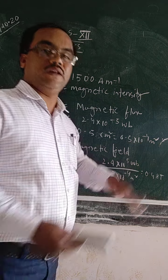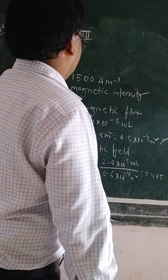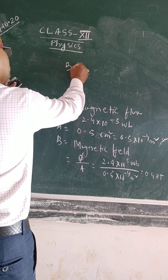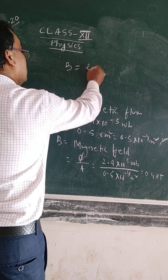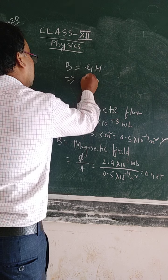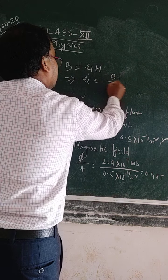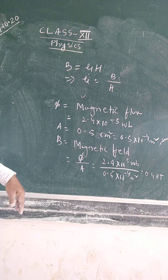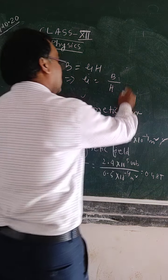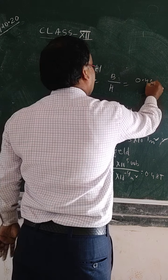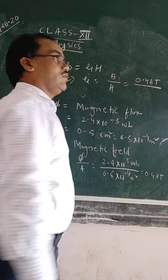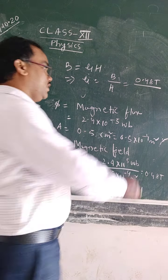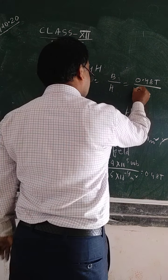Now we calculate the permeability of the medium. The relation is B is equal to mu times H, so mu is equal to B divided by H. That is 0.48 Tesla divided by the magnetic intensity.